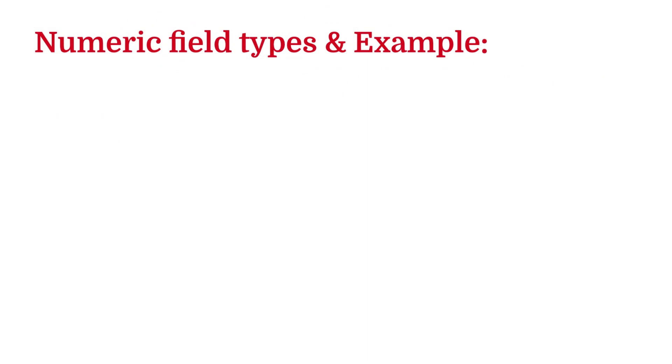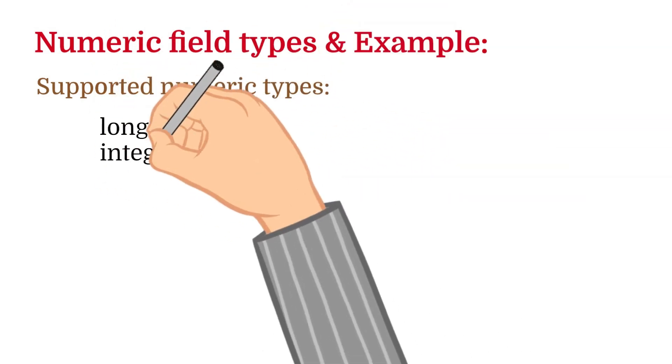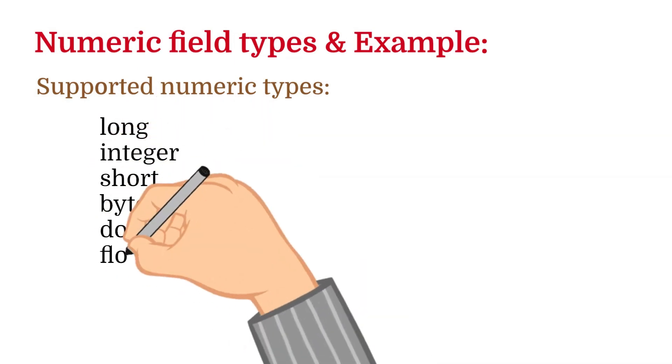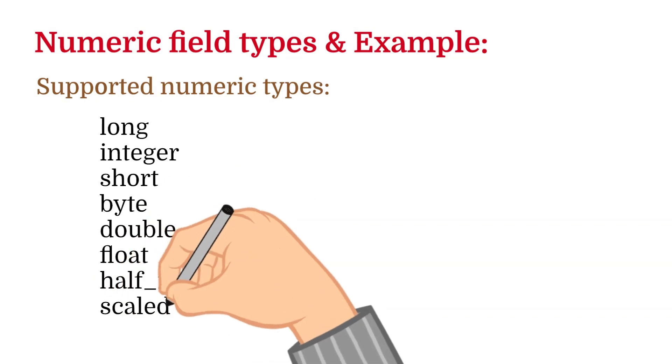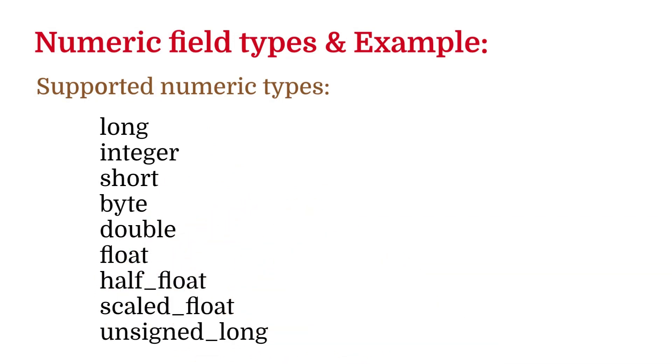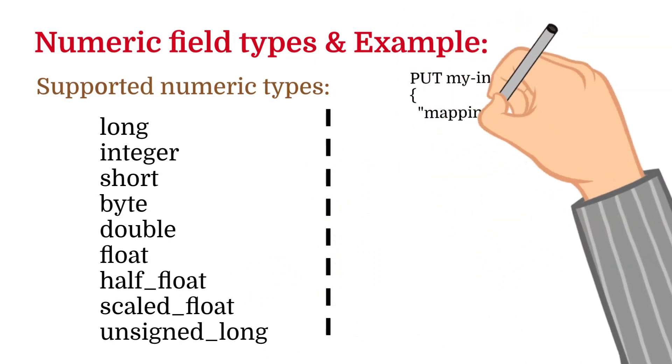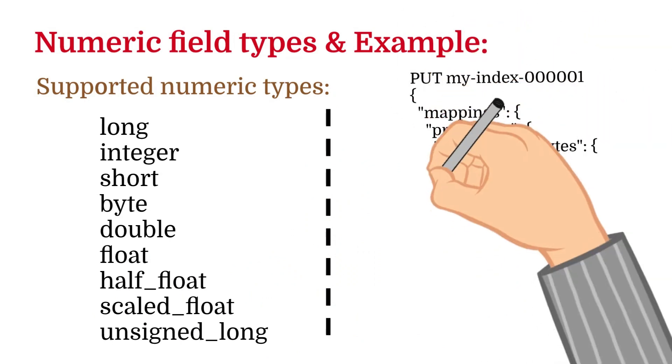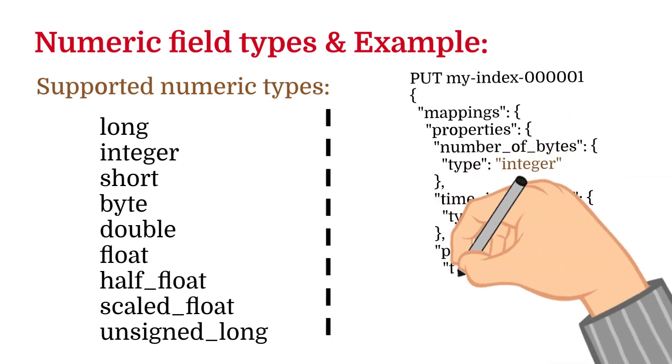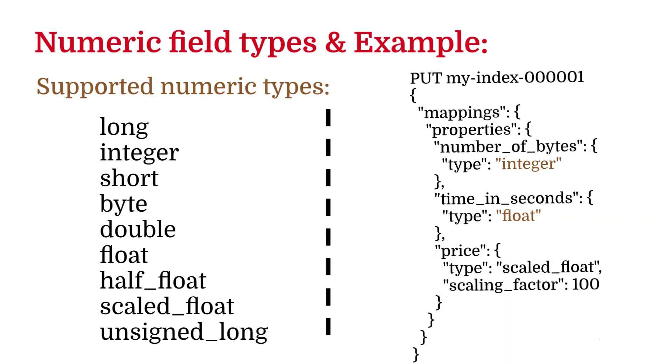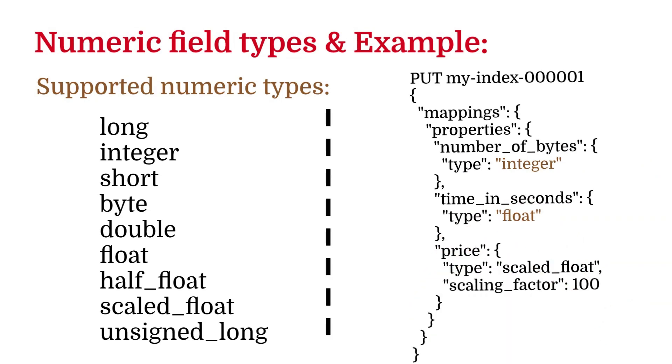The next type of allow expensive queries is the numeric field type. The numeric field type supports numeric types and those are as follows: long type, integer, short, byte, double, float, half float, scaled float, unsigned long. In the example on the right, we have three fields named number of bytes which are of type integer, time in seconds is of type float, and the price is of type scaled float.